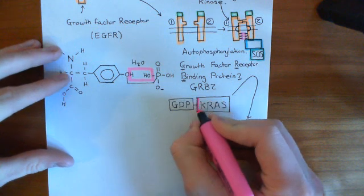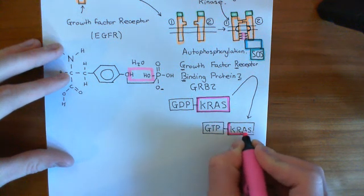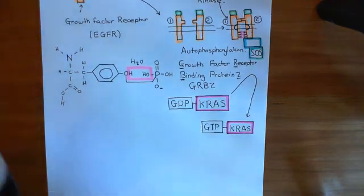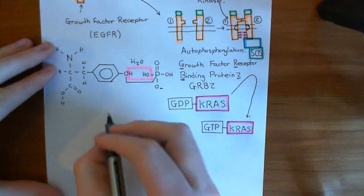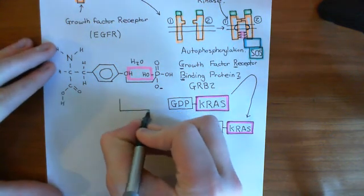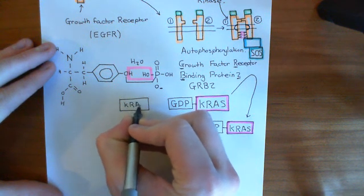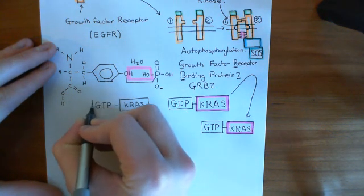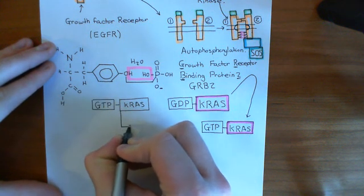Here is the KRAS protein, and we'll have it in purple. KRAS has now been turned on by the binding of GTP. What KRAS now does is it goes and binds to another protein. Here it is in its ON state, which means that it has GTP bound to it. Now that it's in this ON state, it's going to bind and activate another protein by the name of BRAF.